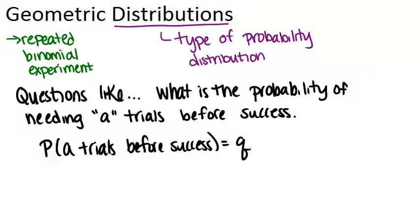raised to the a minus one, because if we aren't succeeding until the ath time, the first a minus one times we're failing each time. And then we multiply that by the probability of success,